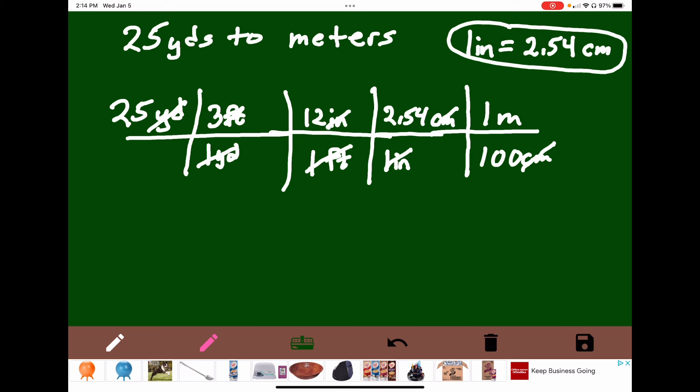What does that leave us with? It leaves us with 25 times 3 times 12 times 2.54, and that's over 100, and the units will be meters.